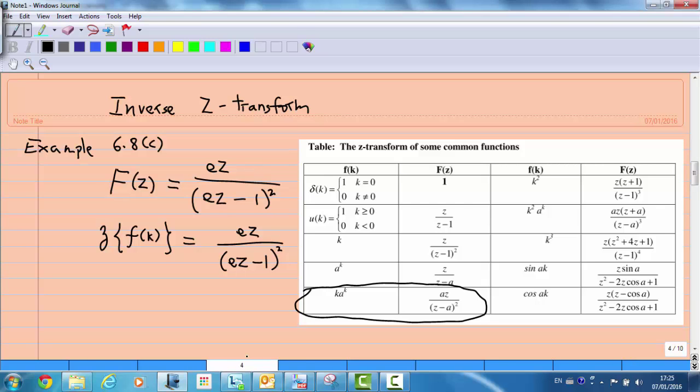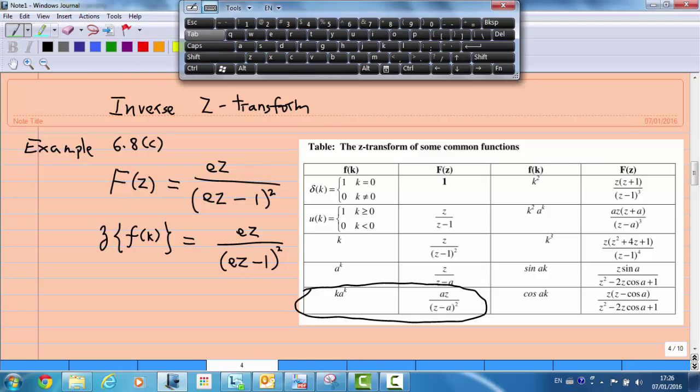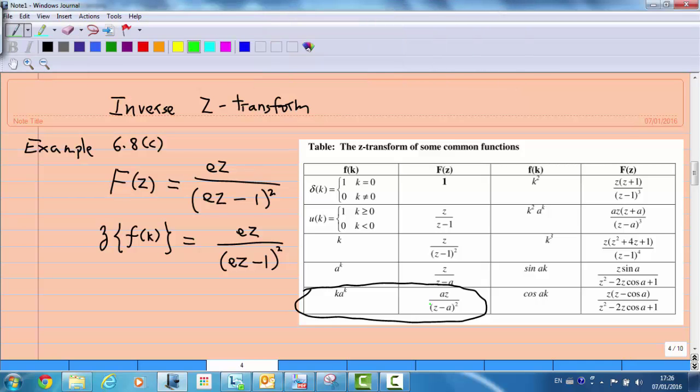However, there are some slight differences. For example, the coefficient of z is 1, and here there is an e. Therefore, we have to think of some ways to get rid of e.